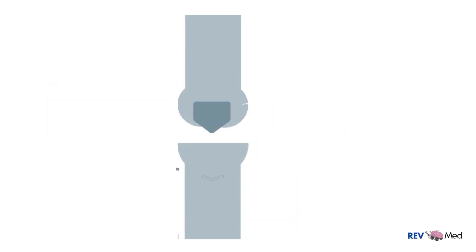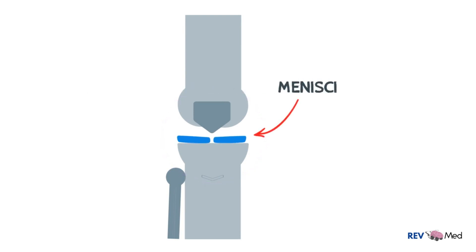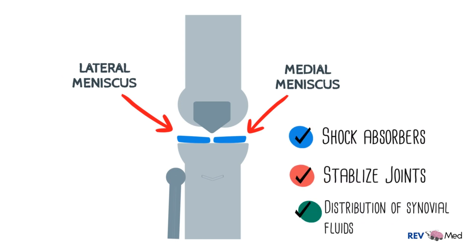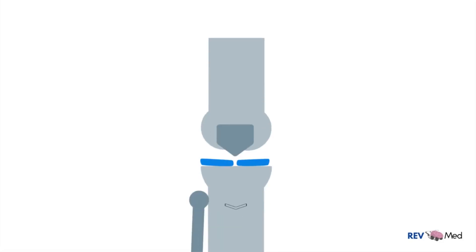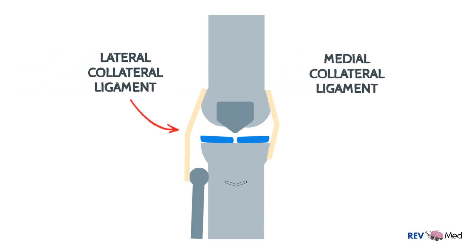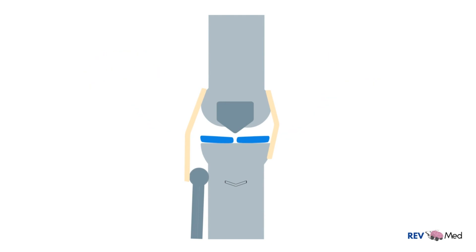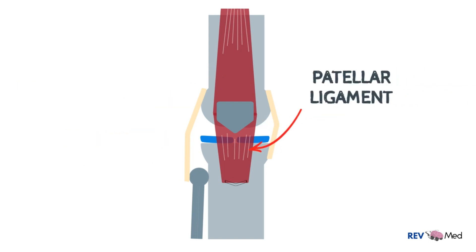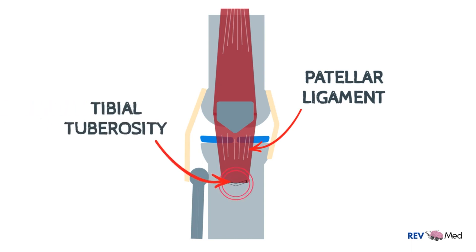Between the joints are fibrocartilaginous structures called menisci — a medial meniscus and a lateral meniscus. They are shock absorbers, help stabilize the joints, and also have a role in distribution of synovial fluid. The knee joint is further stabilized by the lateral collateral and medial collateral ligaments. The quadriceps tendon overlies the patellar bone and forms the patellar ligament, which attaches to the tibial tuberosity. This attachment site gets inflamed with microavulsions, which is key to Osgood-Schlatter disease.